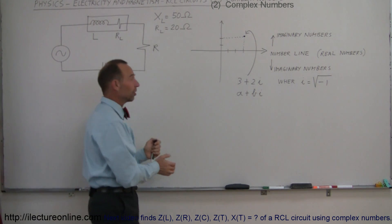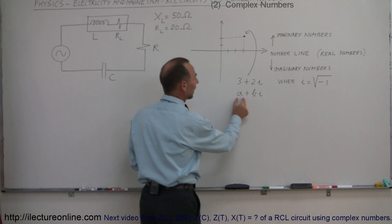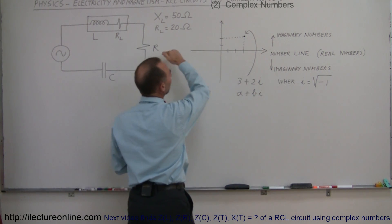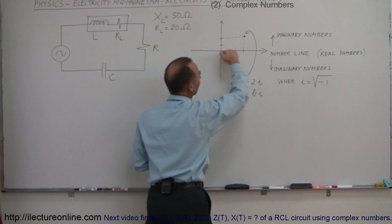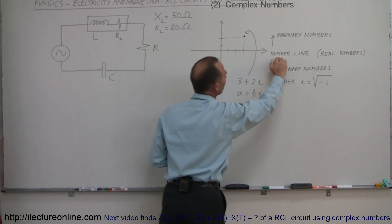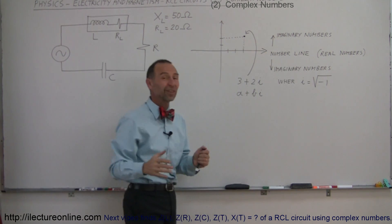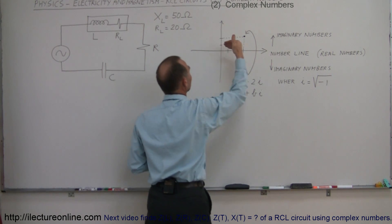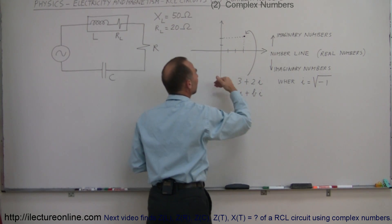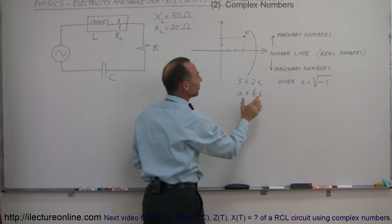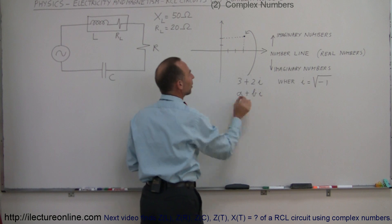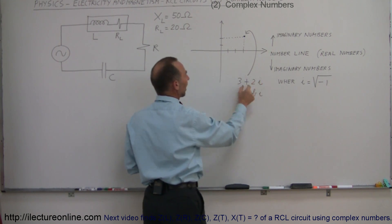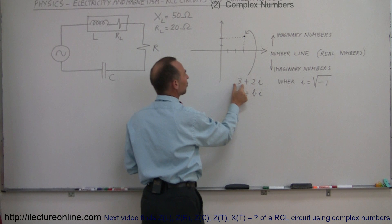If you remember what complex numbers are, complex numbers have a real part and an imaginary part. If you assume that the horizontal axis is the axis of the real numbers, called the number line, which represents the real numbers, then any number off the axis — above or below — is an imaginary number, so it has an imaginary part. In this particular case, let's say that this complex number has a real part equal to 3,